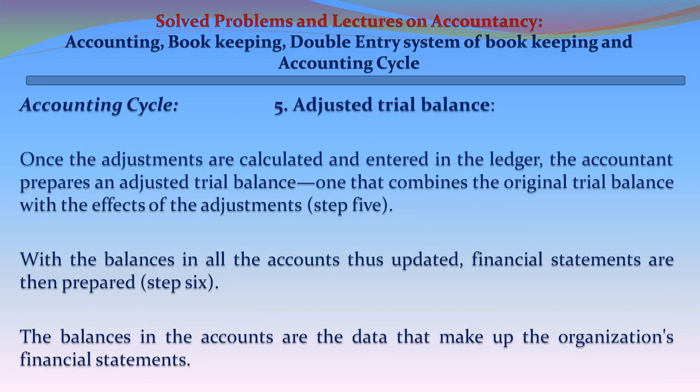Step 5 - Adjusted Trial Balance: Once the adjustments are calculated and entered in the ledger, the accountant prepares an adjusted trial balance — one that combines the original trial balance with the effect of adjustments, with the balances in all accounts updated. Financial statements are then prepared in step 6, using the balances in the accounts as the data that make up the organization's financial statements.